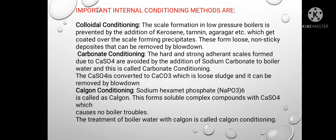Second, carbonate conditioning — the hard and strongly adherent scale formed due to CaSO₄ is avoided by the addition of sodium carbonate to the boiler water; this is called carbonate conditioning. The CaSO₄ is converted to CaCO₃, which is a loose sludge and can be removed by blow-down. Third, calgon conditioning — sodium hexametaphosphate is called calgon. It forms a soluble complex compound with CaSO₄ which causes no boiler troubles. The treatment of boiler water with calgon is called calgon conditioning.